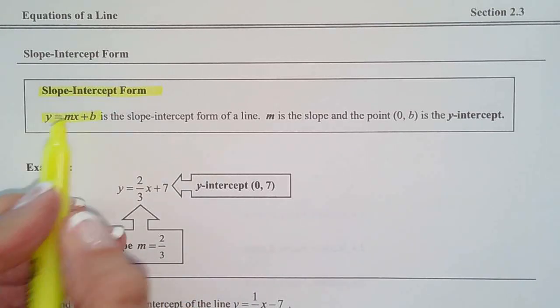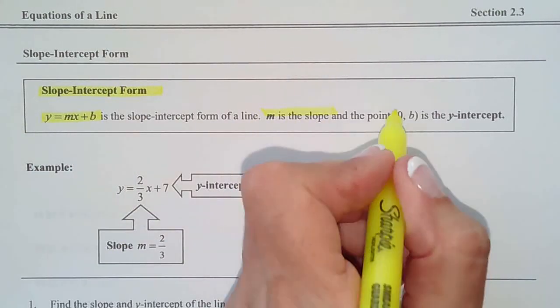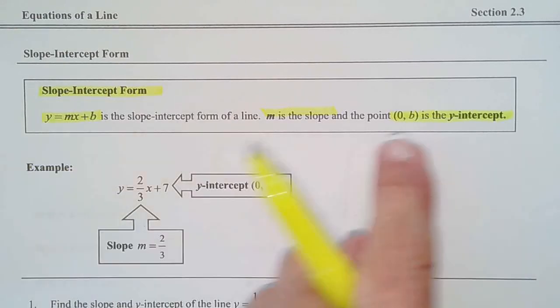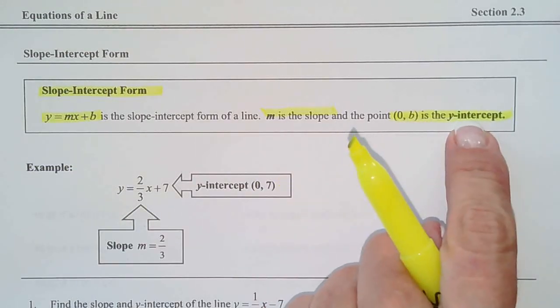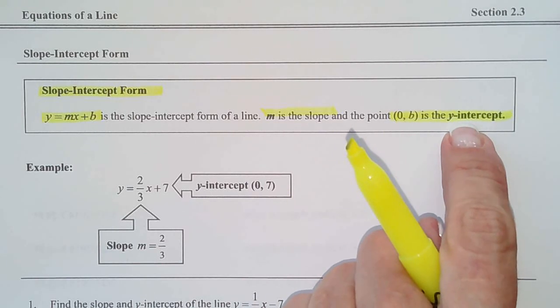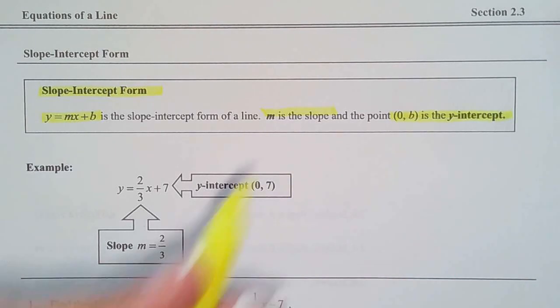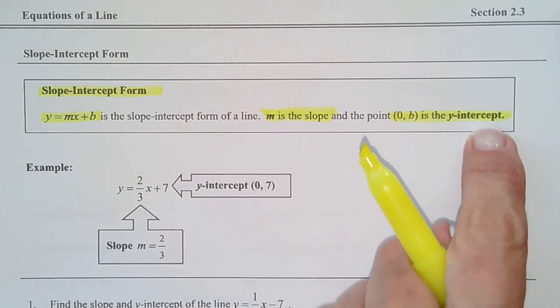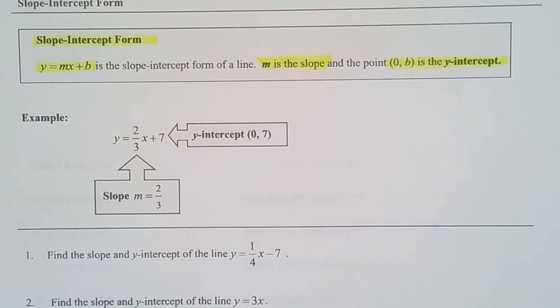because it gives you the slope, which is m, and it gives you the y-intercept, which is 0, b. So, take that constant off the back, put it in the y-slot, because y-intercept, remember, always has x as 0. So, x is 0, and then the y-coordinate is b. And that's why it's called the slope-intercept form, because it gives you the slope and y-intercept of the line.